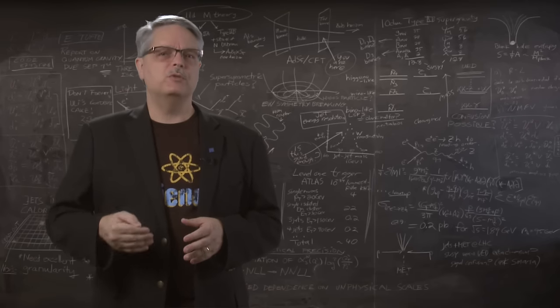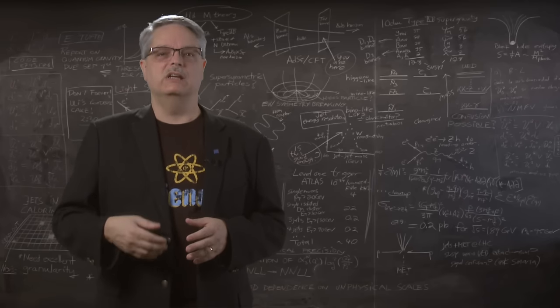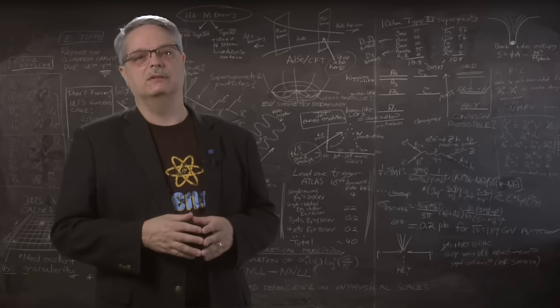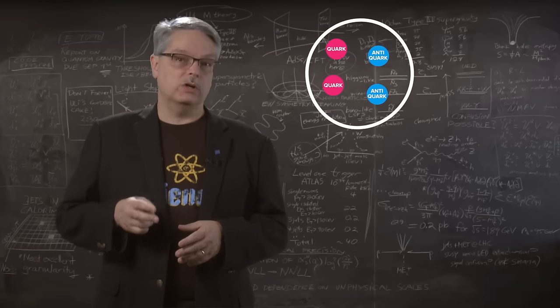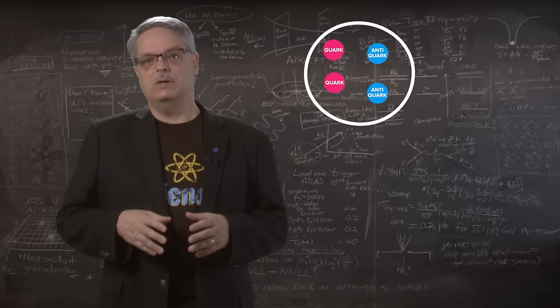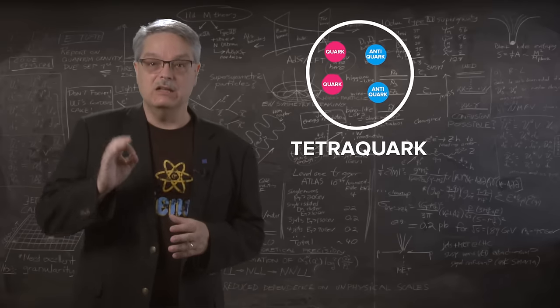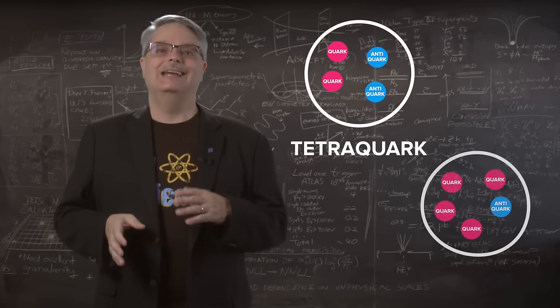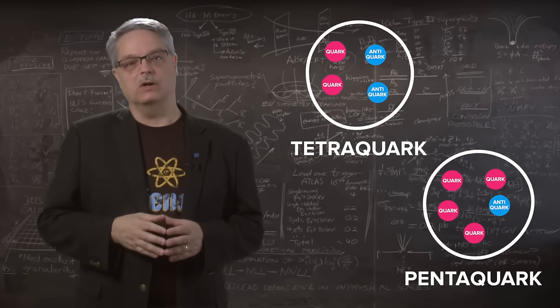However, there are other predicted configurations of quarks that have resisted discovery so far. One option is to have two quarks and two antimatter quarks, what we call a tetraquark. And another is to have four quarks and an antimatter quark, and that is called a pentaquark.